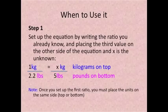Step 1. Set up the equation by writing the ratio you already know and placing the third value on the other side of the equation and X is the unknown. So 1 kilogram over 2.2 pounds is equal to X kilograms over 5 pounds. Notice that once you set up the first ratio you must place the units on the same side top or bottom. So for example you have kilograms on top and on the bottoms you keep the pounds.